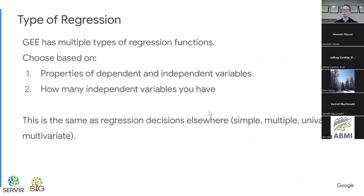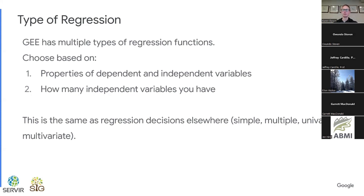Google Earth Engine has multiple types of regression functions that you can use to generate that relationship function. Which of these you choose is based on two main things. The first is the properties of the dependent and independent variables, and the second is how many variables you have. Properties include things like whether it is a categorical or a numeric variable. This really reflects the regression decisions you make elsewhere — simple, multiple, univariate, multivariate, things like that.